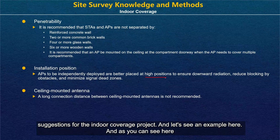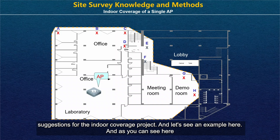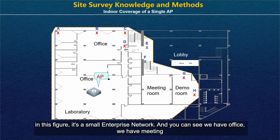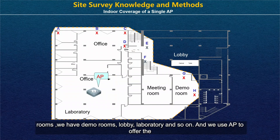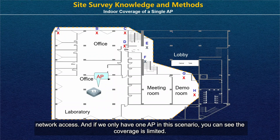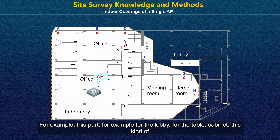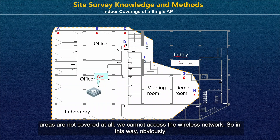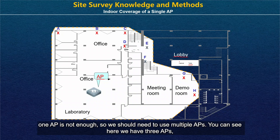Here is an example — a small enterprise network. As you can see in this figure, we have an office, meeting rooms, demo rooms, a lobby, a laboratory, and so on. We use APs to offer network access. If we only have one AP in this scenario, the coverage is limited. For example, the lobby and the cabinet area are not covered at all — you cannot access the wireless network. So obviously, one AP is not enough.